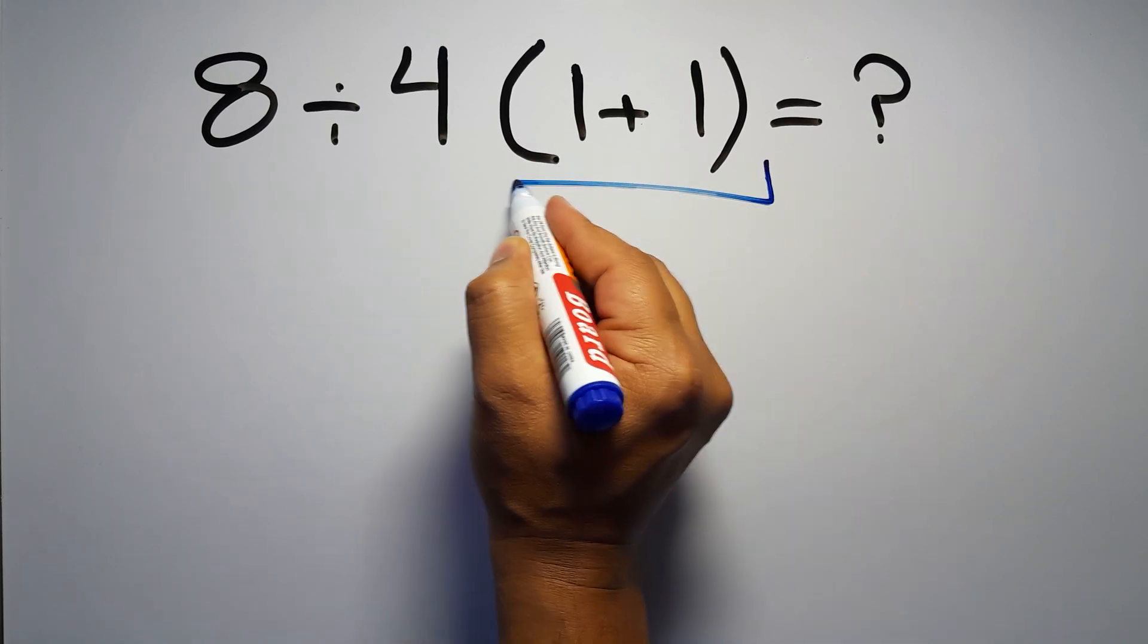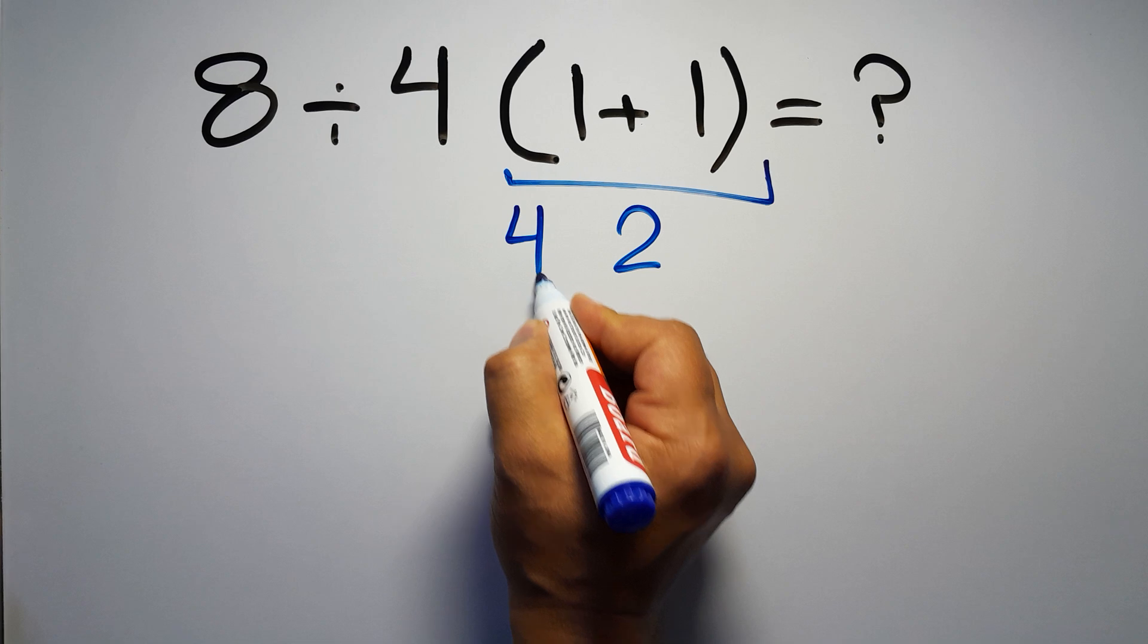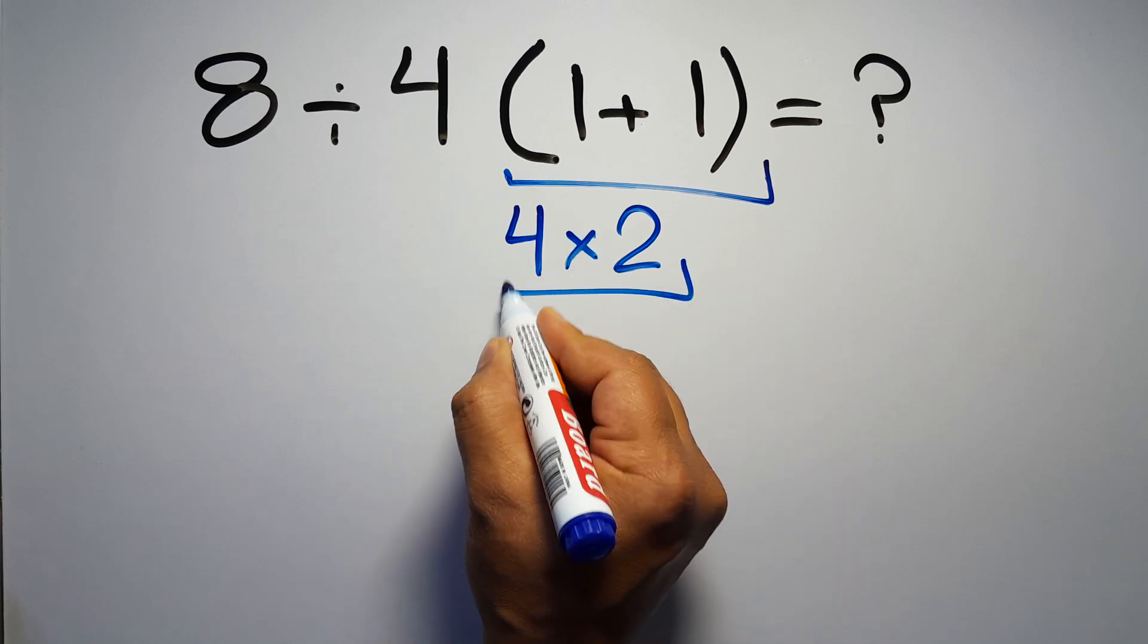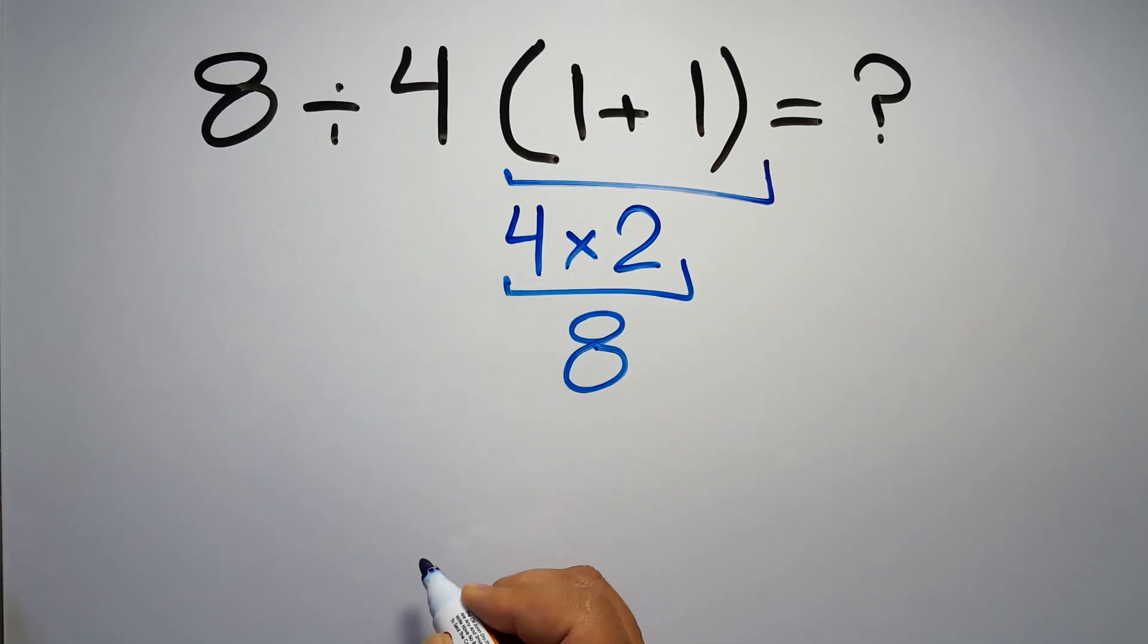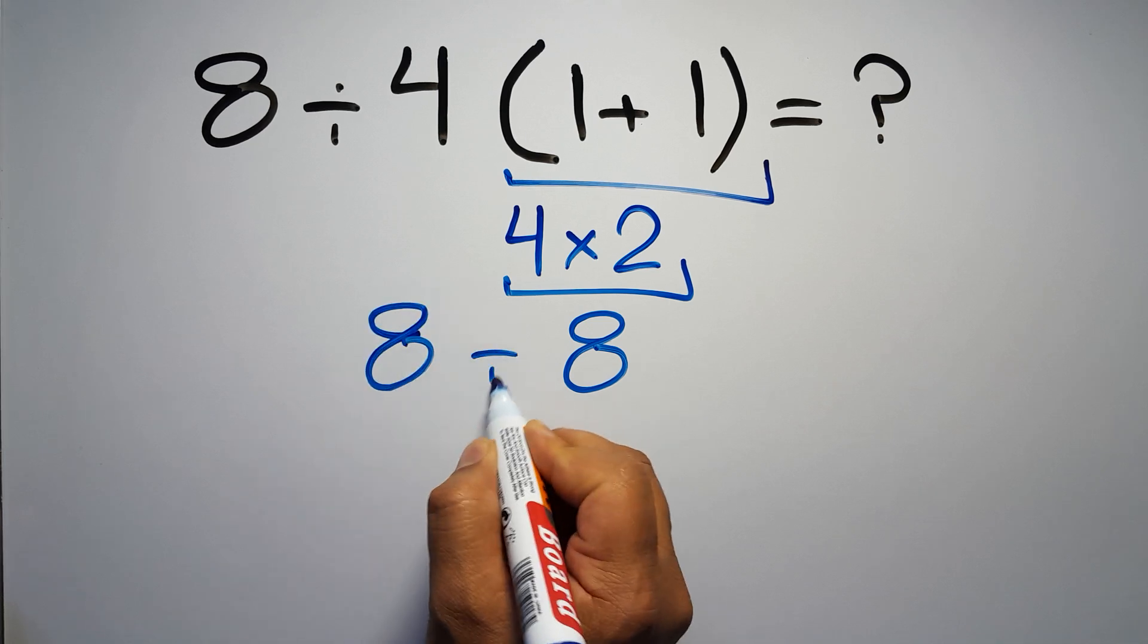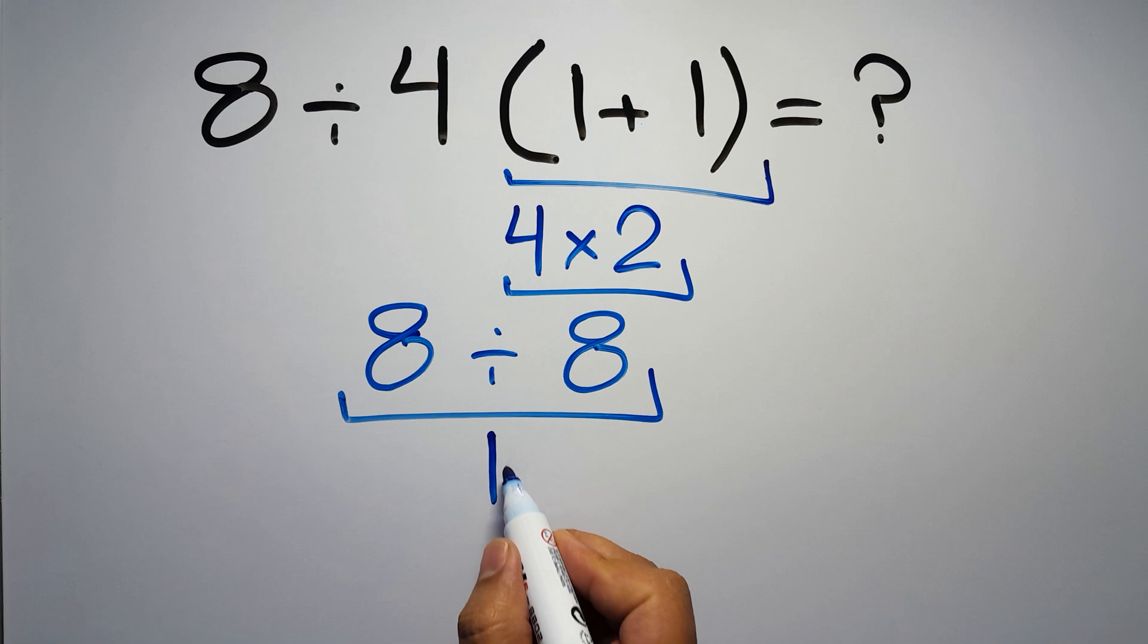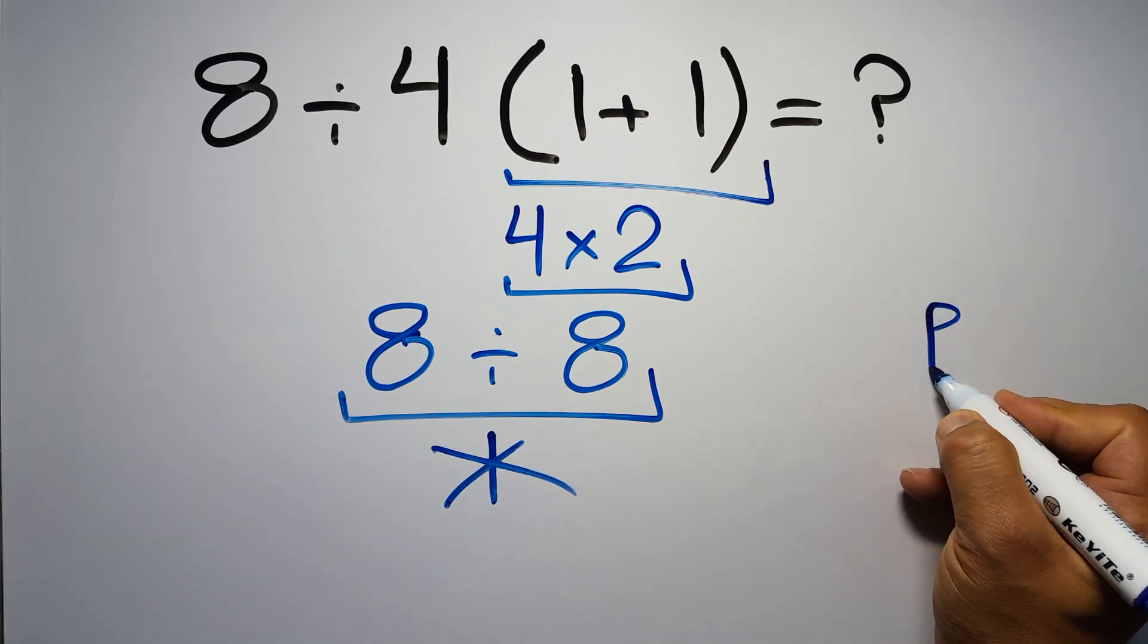1 plus 1 gives us 2, and 4 times 2 is just 8, so 8 divided by 8 gives us 1. But this answer is not correct because according to the order of operations, first we have to do parentheses.